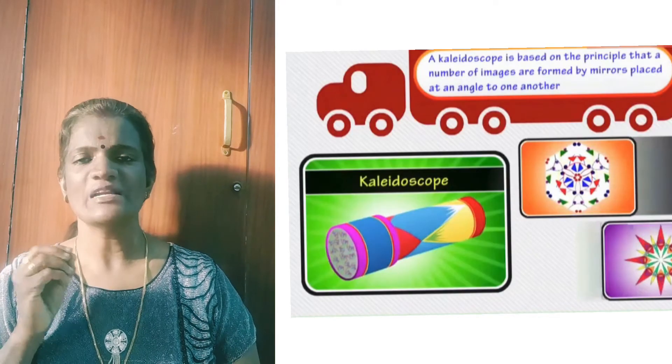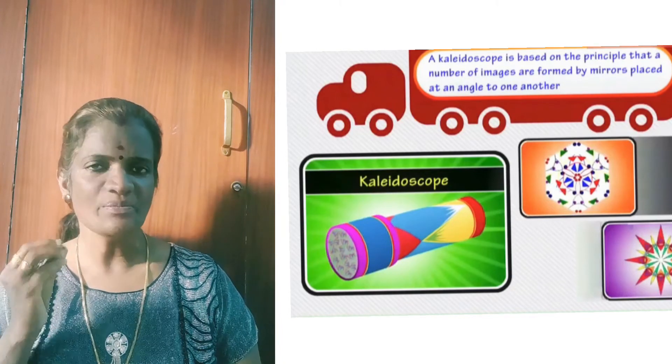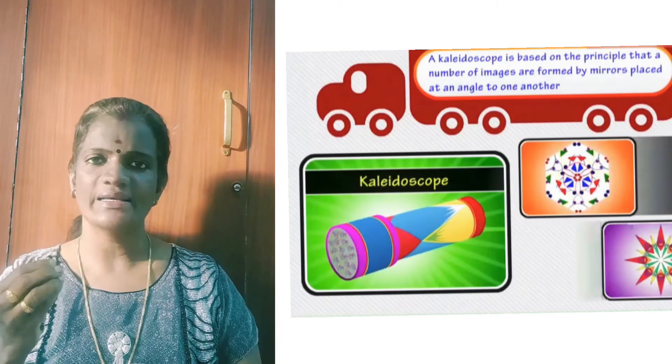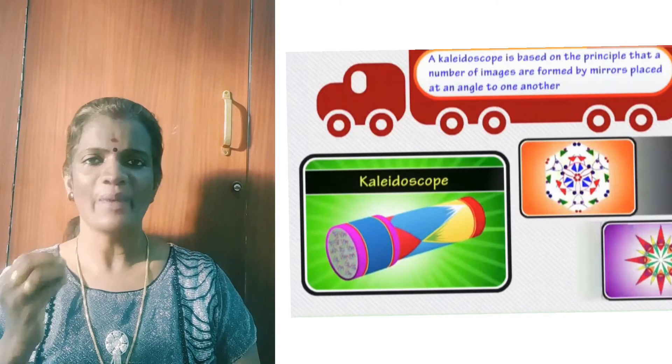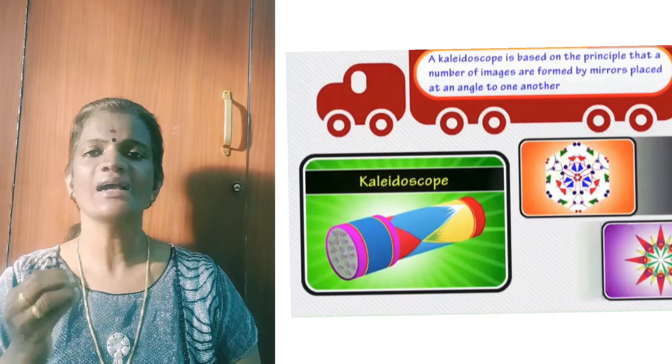A kaleidoscope is based on the principle that a number of images are formed by placing mirrors at an angle to one another, and it is used to make numerous beautiful patterns. Next we will learn about how to construct or make a kaleidoscope.